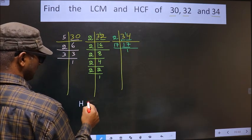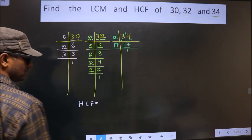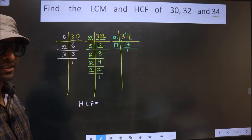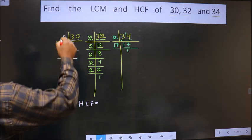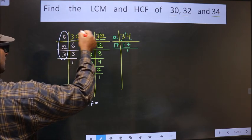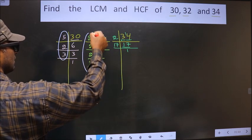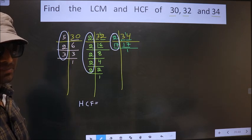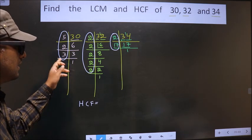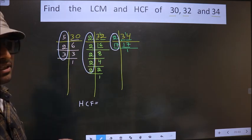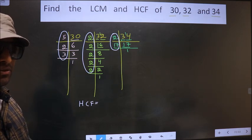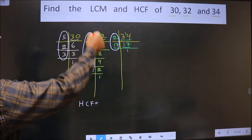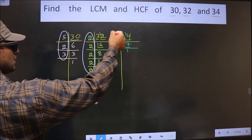So now our HCF is the product of numbers that should be present here and here and also here. So now we should find the numbers that should be present in these 3 places. I repeat. We should find the numbers that should be present here and here and also here.